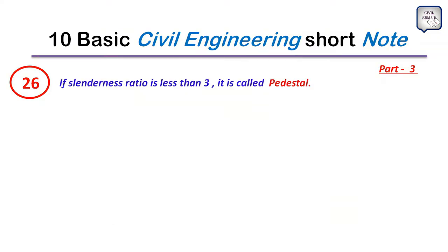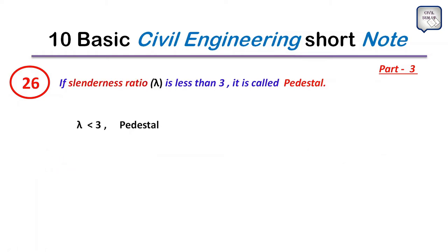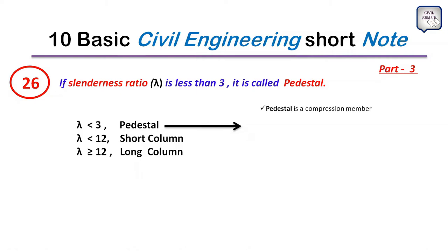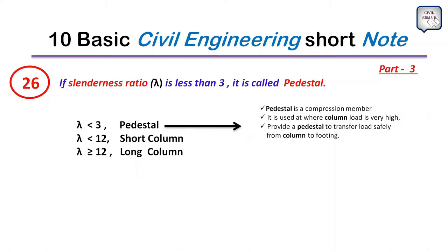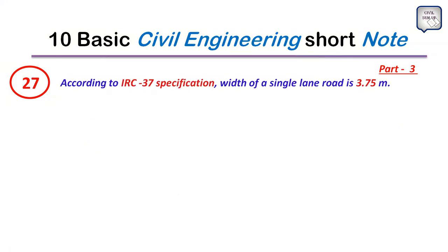Point 26: If the slenderness ratio (lambda) is less than 3, it is called a pedestal. The slenderness ratio equals effective length divided by least lateral dimension. If lambda is less than 12, it is a short column; if greater than or equal to 12, it is a long column. A pedestal is a compression member used where column loads are very high to transfer load to the footing. Short columns fail under ultimate compressive load by crushing, while long columns fail due to lateral deflection or buckling.